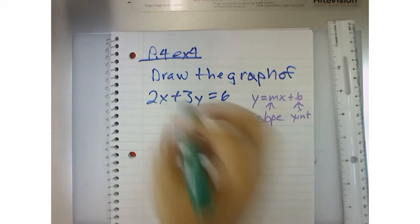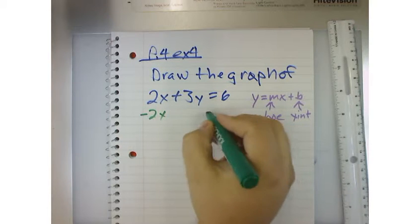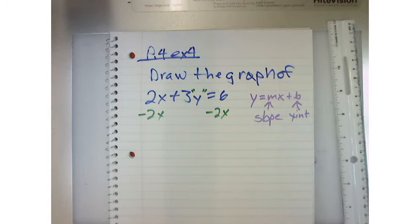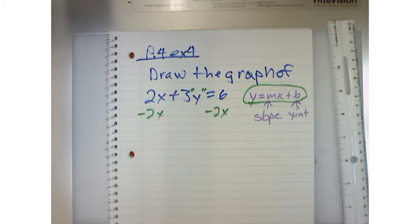So now what we want to do is get y by itself. So we're going to subtract 2x from both sides. So we're going to solve for y, basically. And when we solve for y, it will look like this: y equals mx plus b, if we do it right.